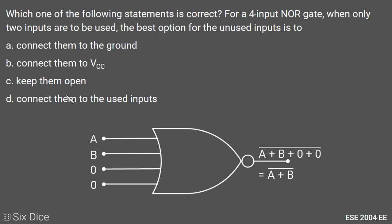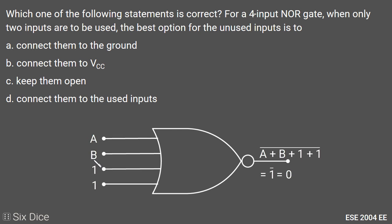Option B: Connect the unused inputs to VCC, meaning connect them to logic 1 or high. The gate inputs become A, B, 1, 1, so the output is the complement of A plus B plus 1 plus 1. Since 1 plus anything in Boolean algebra is always 1, its complement is 0. The output becomes a constant 0 and does not depend on inputs A and B, so Option B is wrong.